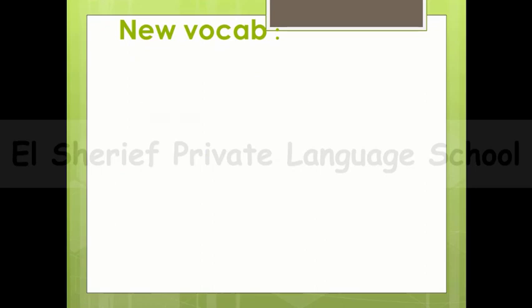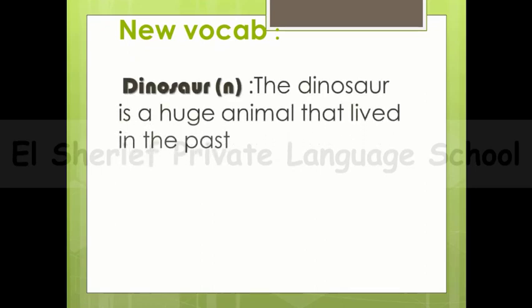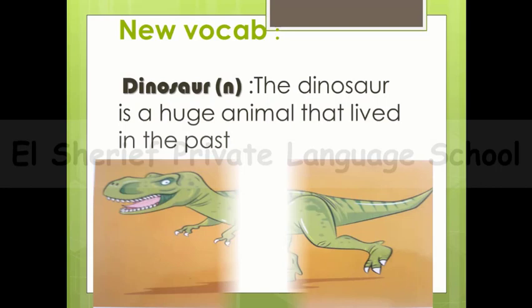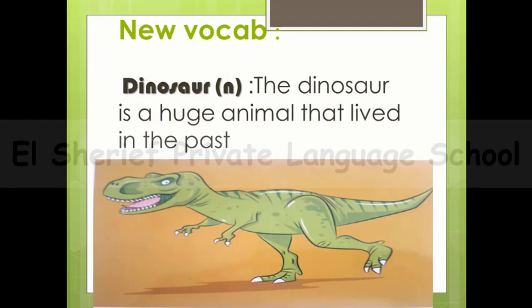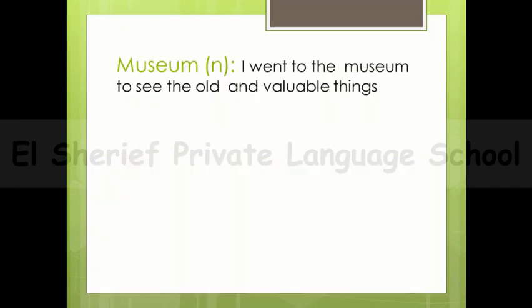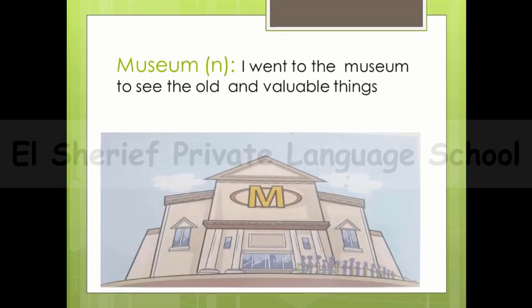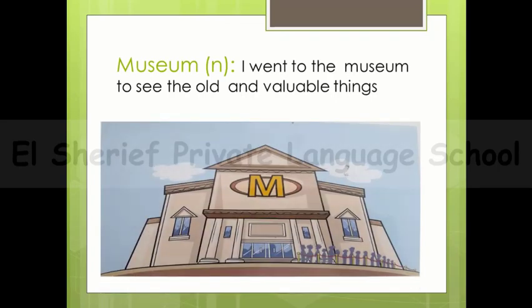Now it's time for our new vocabulary. The first word: dinosaur. The dinosaur is a huge animal, as you can see in the picture, that lived in the past. The second word: museum. From the picture you can see a big place that we can go to in order to see old, valuable, and historical things. For example: I went to the museum to see the old and valuable things.